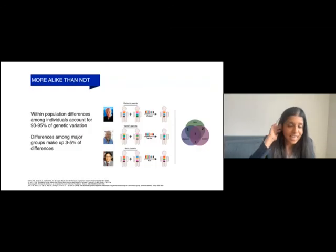What lessons can we apply about race to kidney health? The first thing is remembering that within-population differences account for the bulk of genetic variation. Differences among major groups make up only 3-5% of differences. This figure shows in a Venn diagram how Dr. Kim has more allelic commonality with Dr. Watson and Dr. Venter than Watson and Venter have with each other.